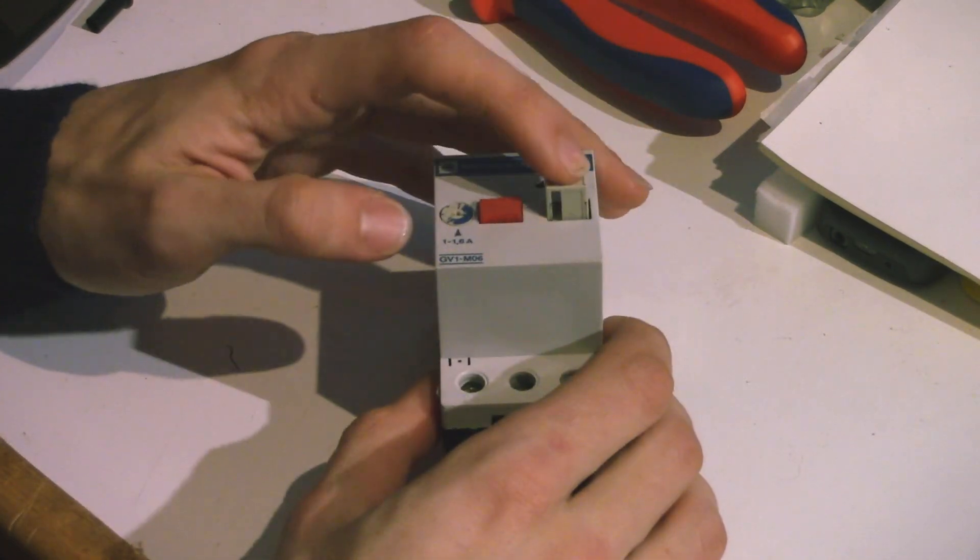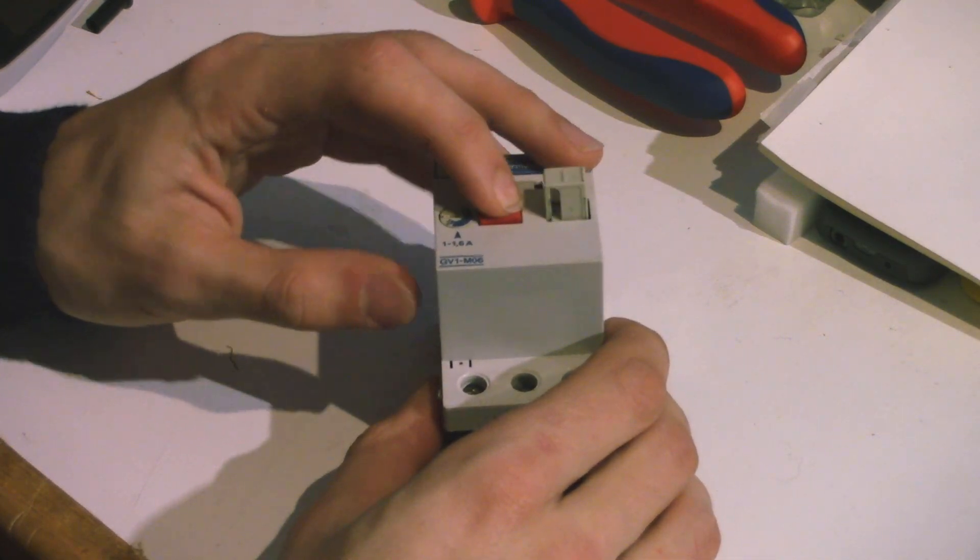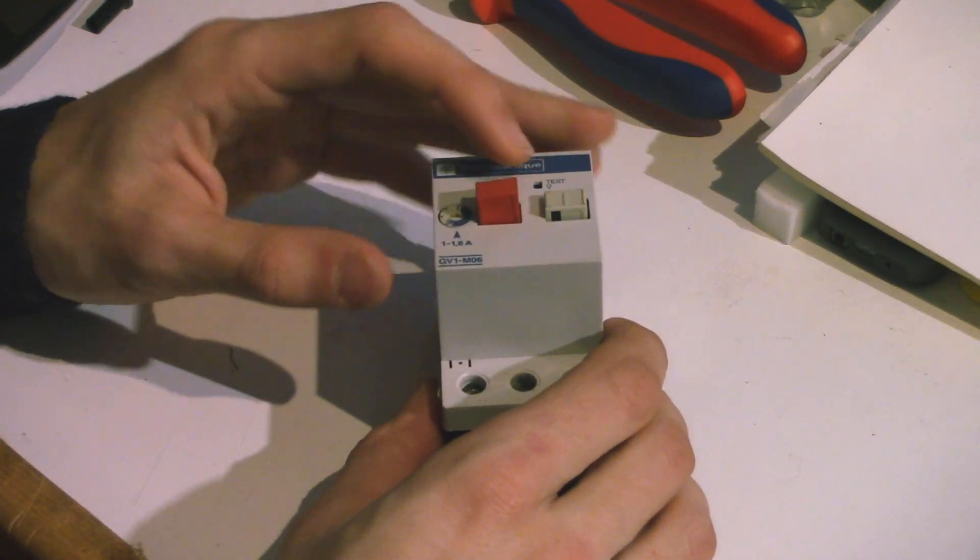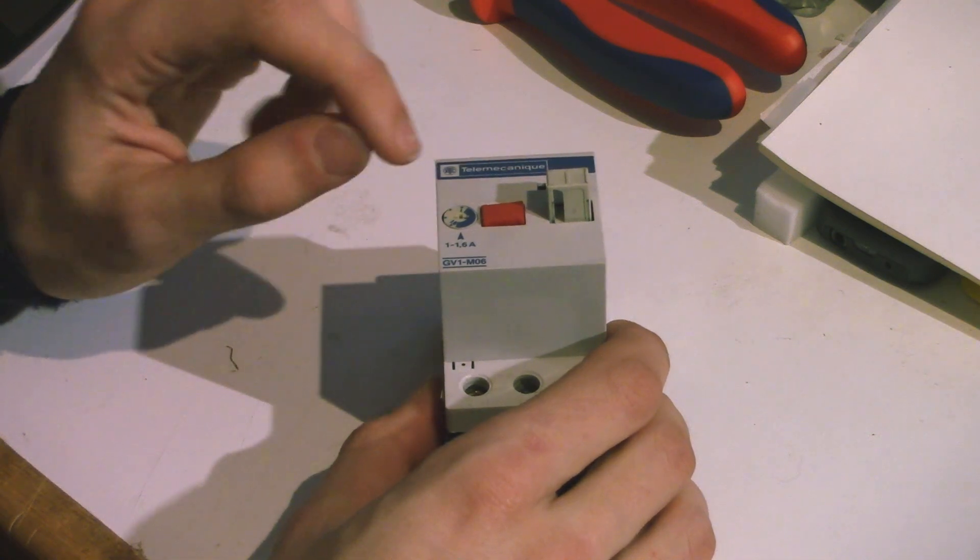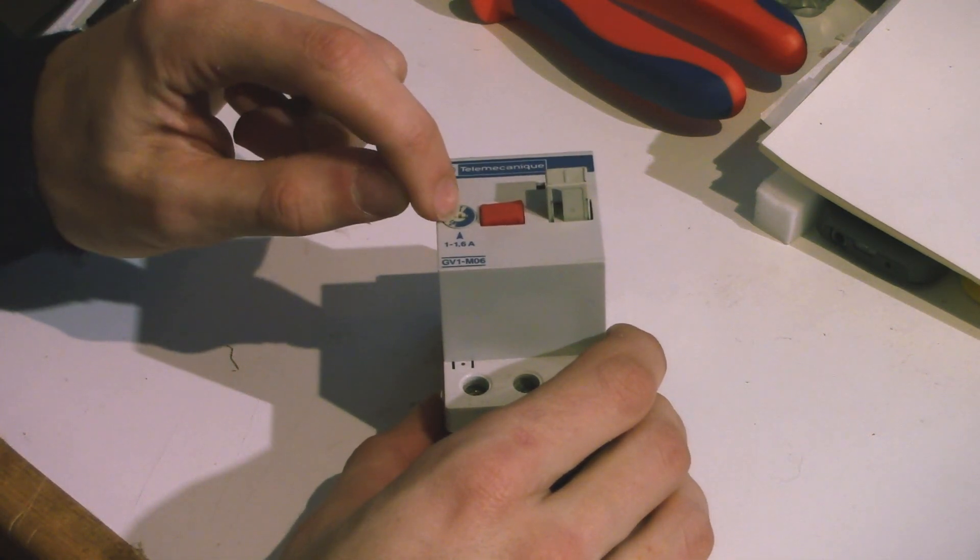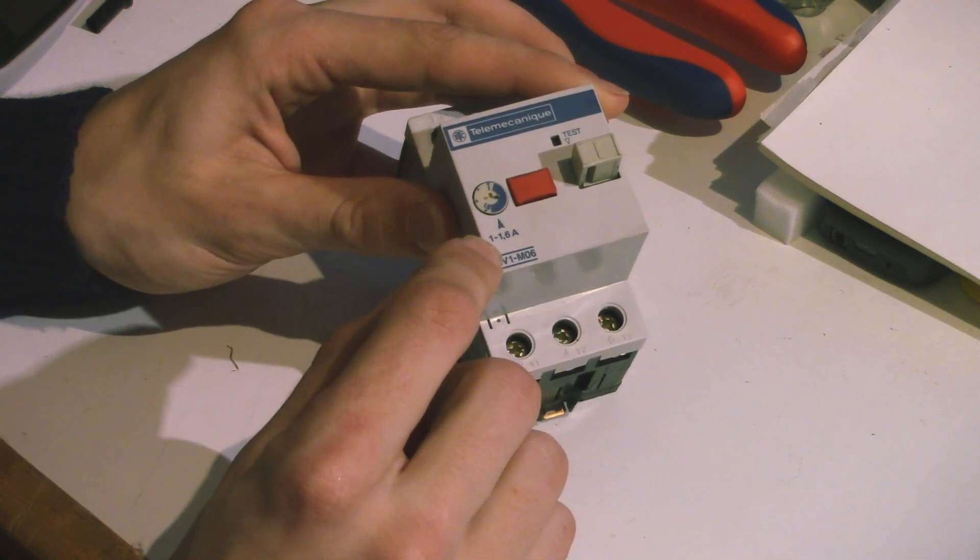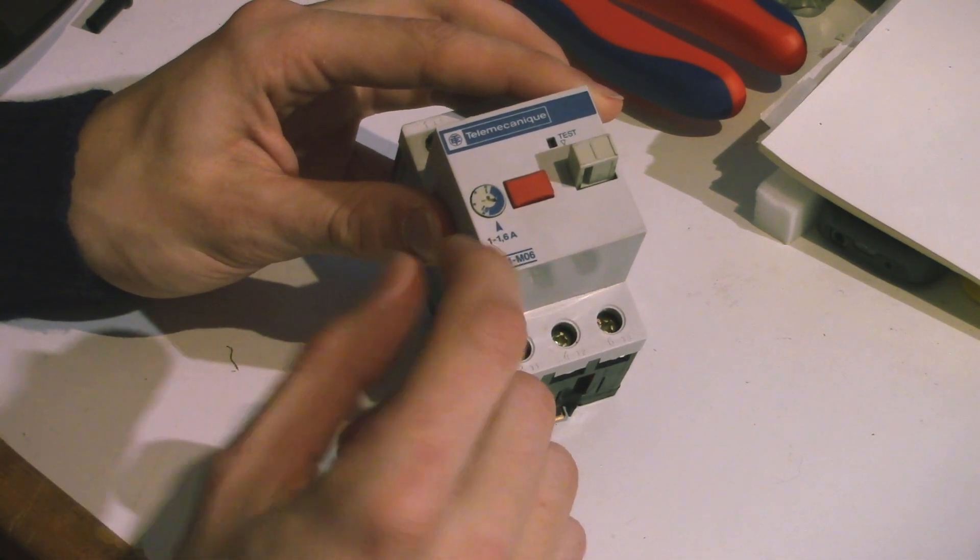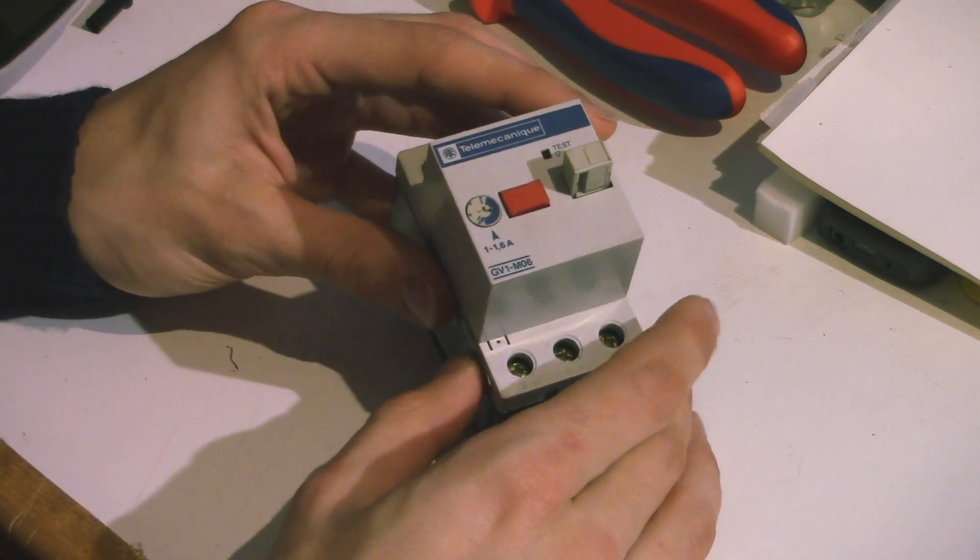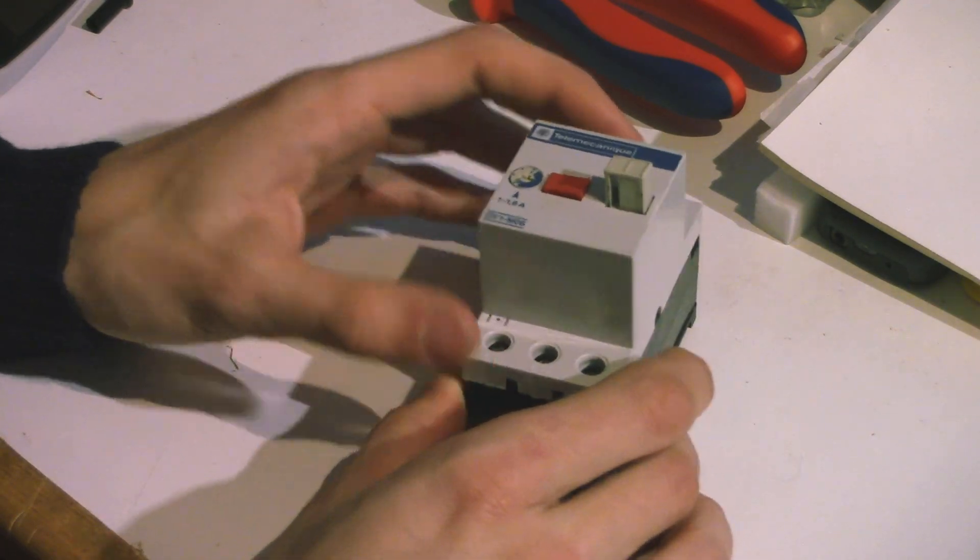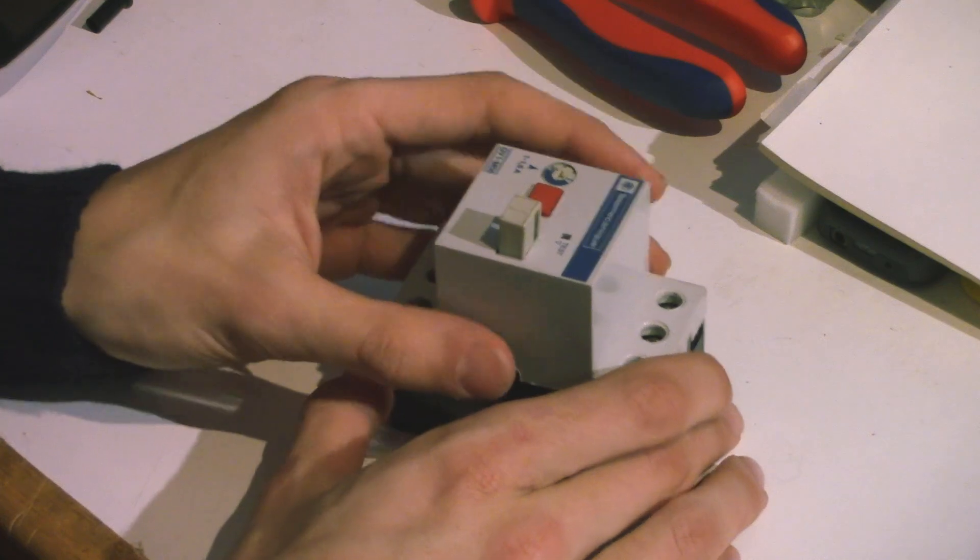Also, you can see it's operated by these push buttons. So this one turns it on, and this one turns it off. And then over here we've got a screw which you can use to adjust the maximum current between 1 and 1.6 amps. So it's a customizable breaker as well, which is pretty nice. Okay, so let's take a look inside.